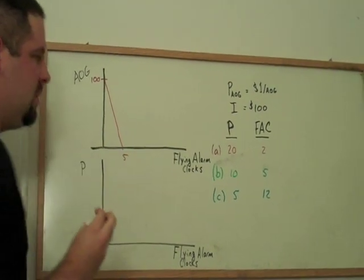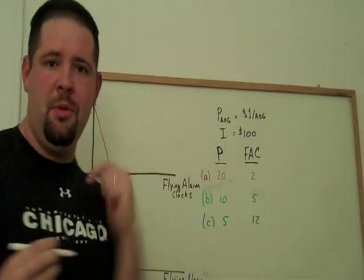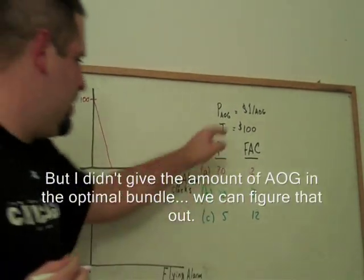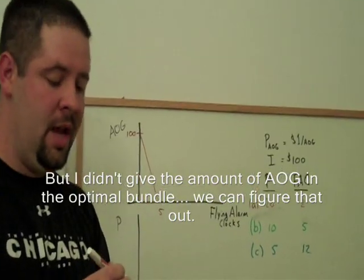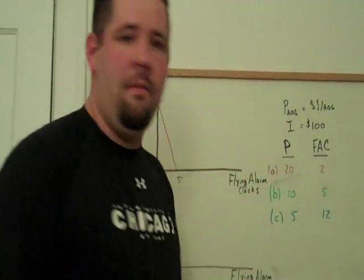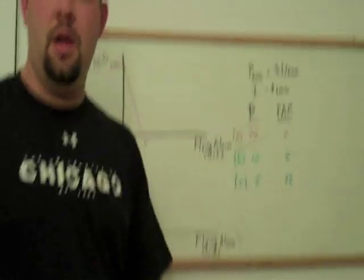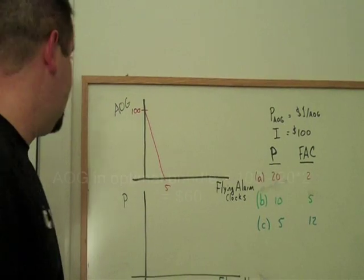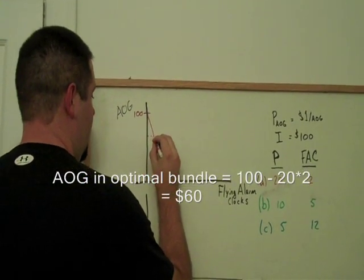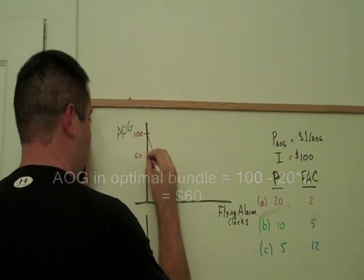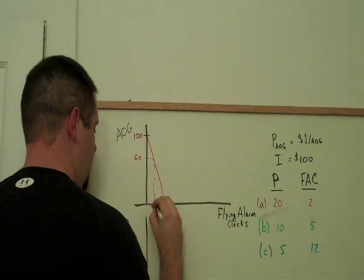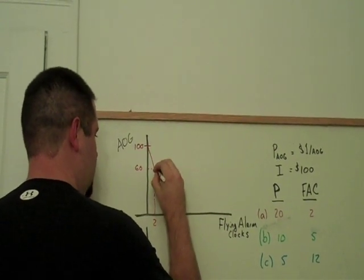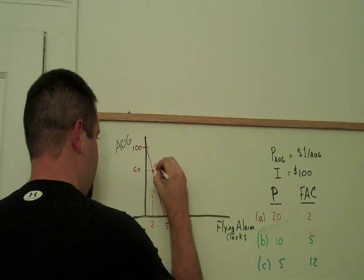Now, I've provided some more information here. It said that the optimal bundle, that's what this table is telling us, is optimal bundles, has two flying alarm clocks. Now, spending two flying alarm clocks, each at a price of $20, means we spend $40, and we have $60 left over on all of the goods. So there's $60 on all of the goods, two flying alarm clocks, there's bundle A.